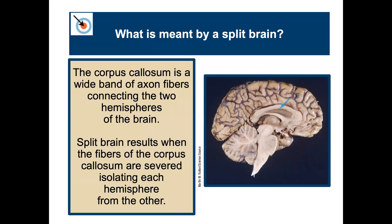What is meant by a split brain? The blue arrow is pointing to the corpus callosum, which is a wide band of axon fibers connecting the two hemispheres of the brain. A split brain results when the fibers of the corpus callosum are severed, which isolates each hemisphere from the other. We've known for over 100 years that the two sides of the brain have some different purposes.